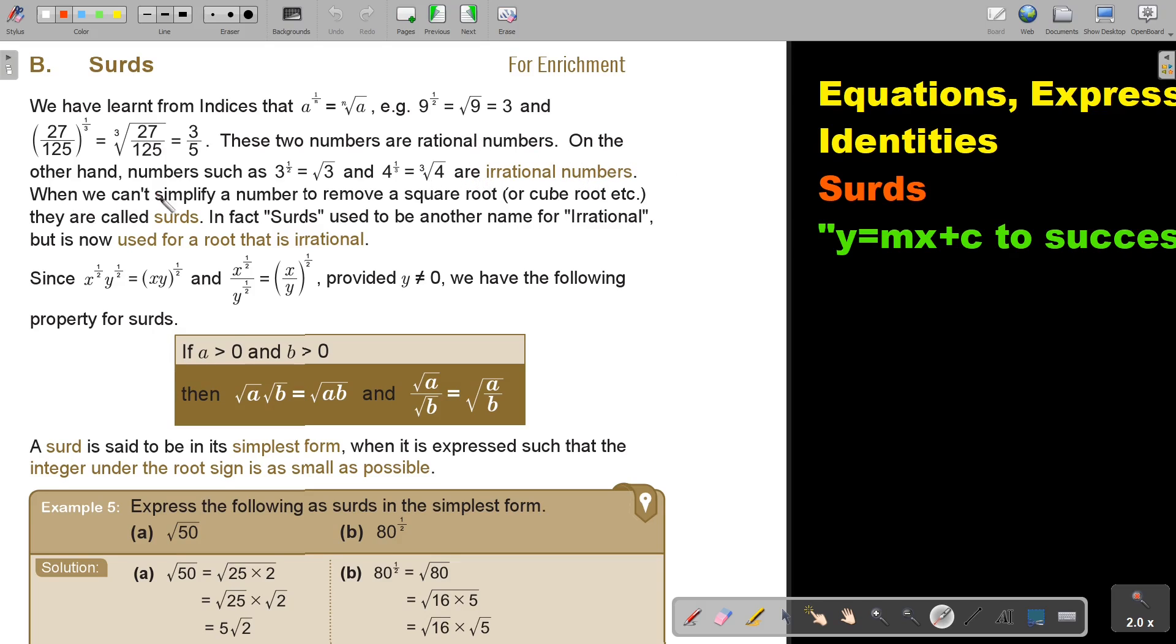So when we can't simplify a number to remove a square root or a cube root, they are called surds. In fact, surds used to be another name for irrational but is now used for a root that is irrational.